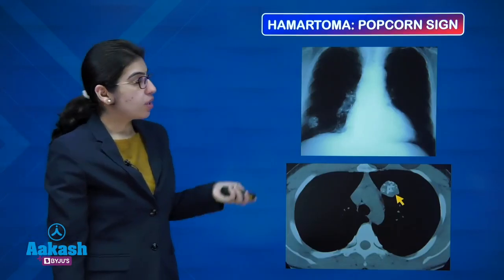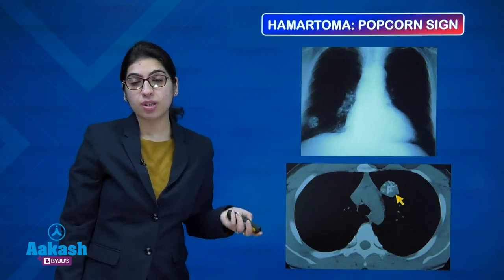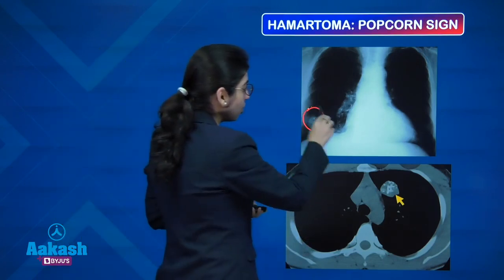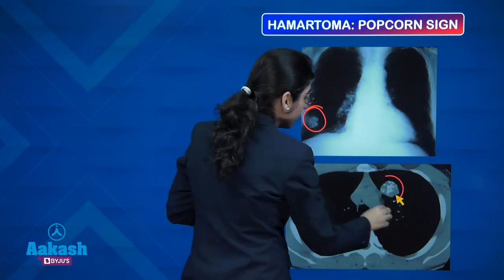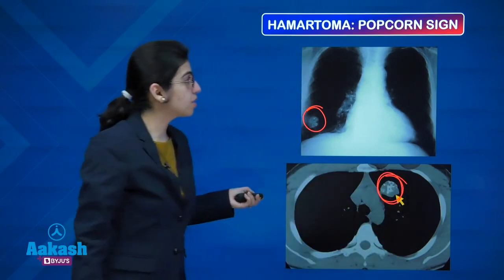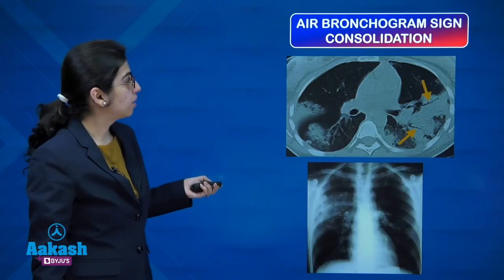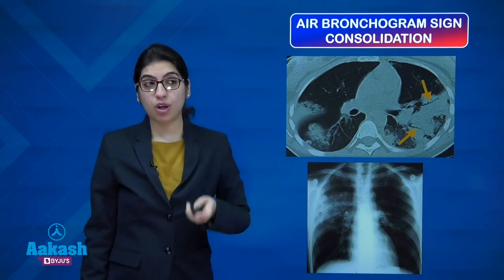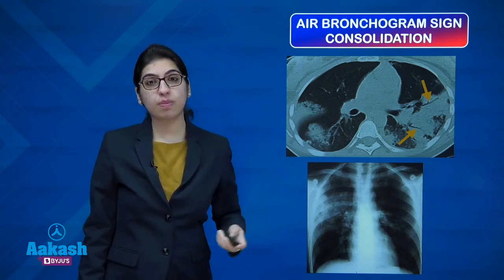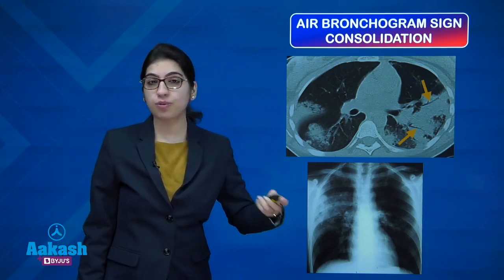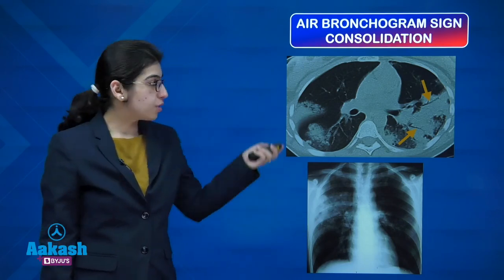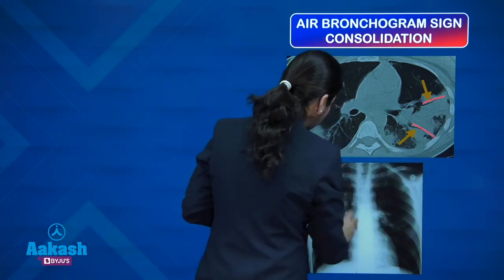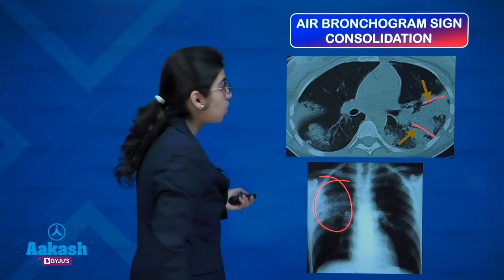Popcorn appearance is seen in hamartoma — a benign tumour — presenting as a nodule with coarse chunky calcifications. In lung consolidation, where air is replaced by pus, fluid, or blood, the typical sign is the air bronchogram — the sign of consolidation.